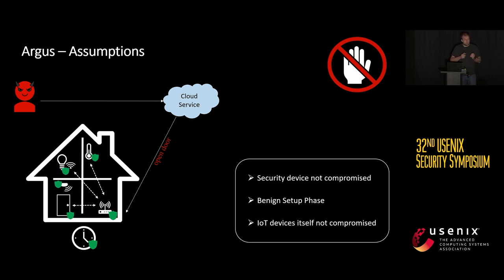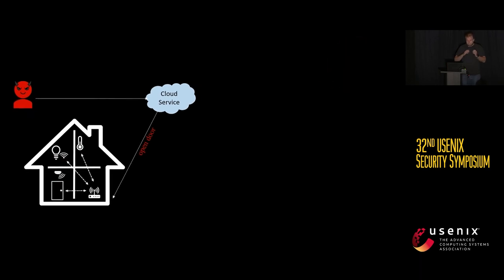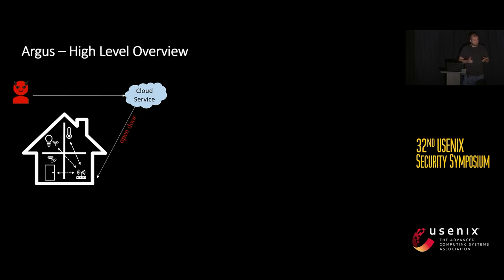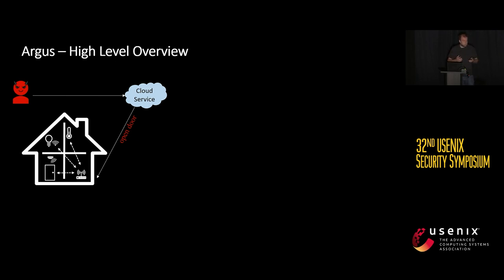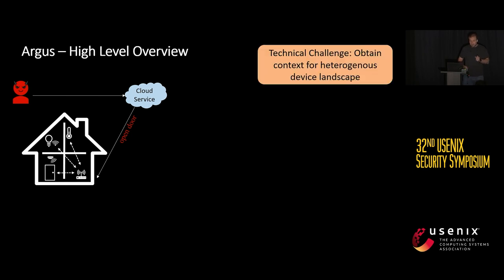The last assumption is that the IoT devices themselves are not compromised. As seen on previous slides, there is plenty of work that looks at the network traffic to detect attacks that compromise IoT devices, so we consider these attacks out of scope for Argus. How does Argus work? The first challenge is that when looking at the context of IoT devices — the states of all other devices — we have a very heterogeneous device landscape with many manufacturers using different platforms, different clouds, and different protocols. The question is how we can obtain the state of IoT devices from this landscape.